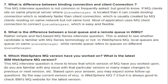What is the difference between a bindings connection and a client connection? If an MQ client sits on the same physical server where the queue manager is located, it can create a bindings connection, which is relatively faster than a client connection. A client connection is usually created by an MQ client residing on the same network but not the same host. Most applications use MQ client connections to connect to the queue manager, as it is easy and flexible.